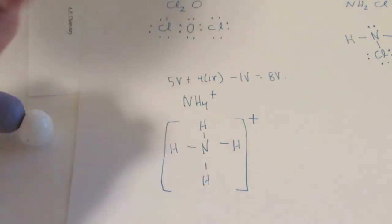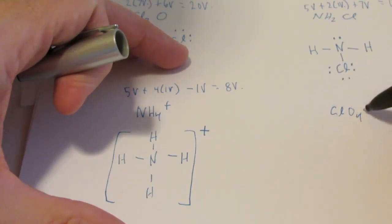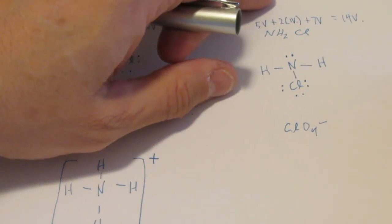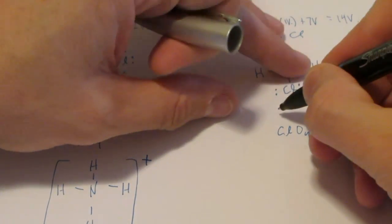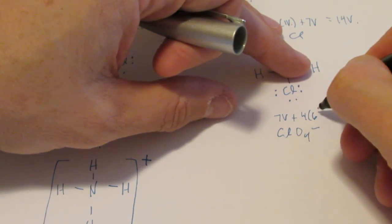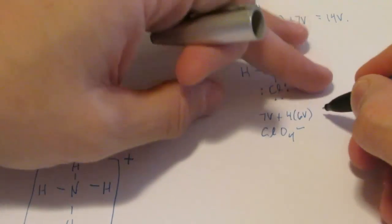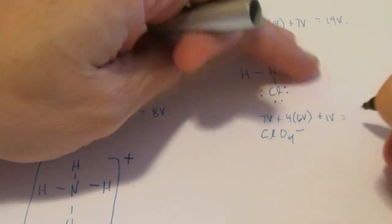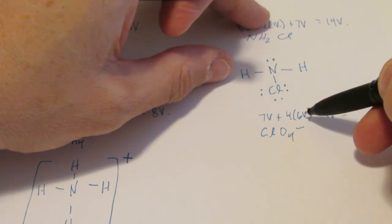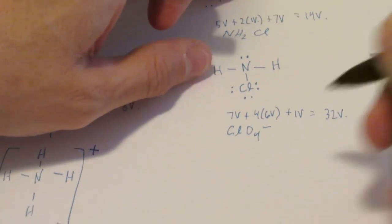Let's take a look at this next one. Let's do ClO4 negative, the perchlorate ion. Chlorine has seven valence. Each oxygen has six valence. We have a negative one charge. That means we've gained an electron. So I'm going to add one more valence to the total. So I have seven plus twenty-four, thirty-one and one more, that gives me thirty-two valence.